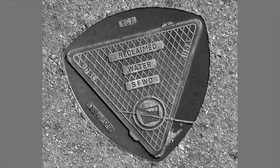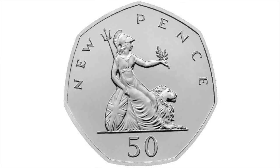Constant width curve shapes also make good alternatives to circular manhole covers, since they can't fall down a circular hole of the same width. And non-circular coins of constant width, like the British 50 pence piece, which is an equilateral curved heptagon, can be used in vending machines instead of the more conventional round coins.